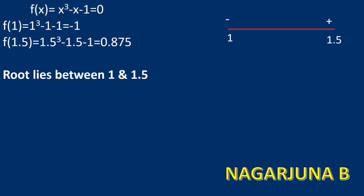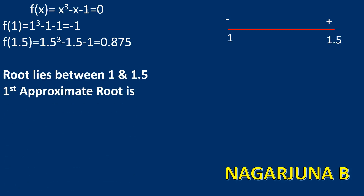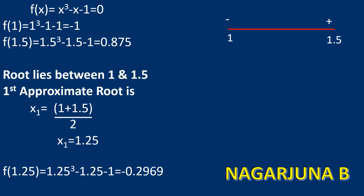Now using the formula, this is the first step. The first approximate root is x₁ = (a + b) / 2 = (1 + 1.5) / 2 = 1.25. Find f(1.25): substituting gives -0.2969. After the decimal point consider four significant digits, rounding off by rounding rules. The new root found is 1.25 and its f value is negative, so the root now lies between 1.25 and 1.5.